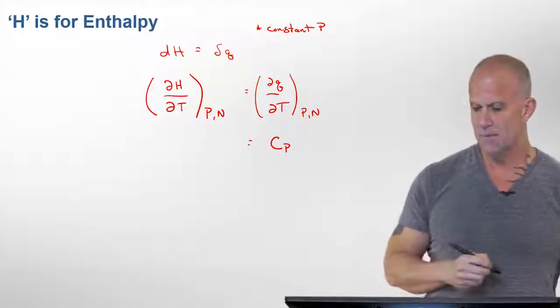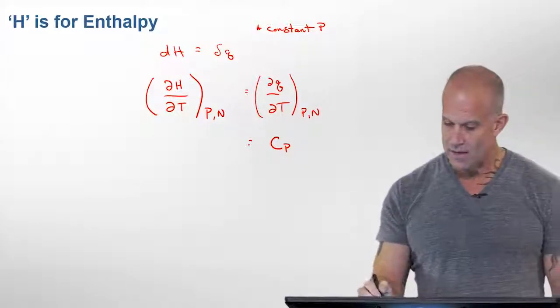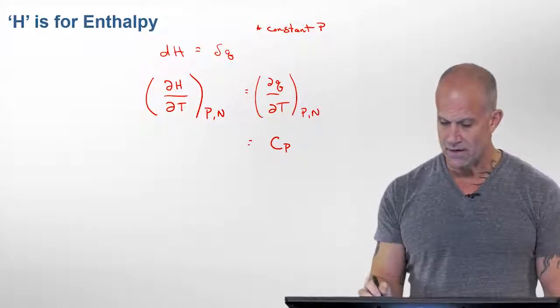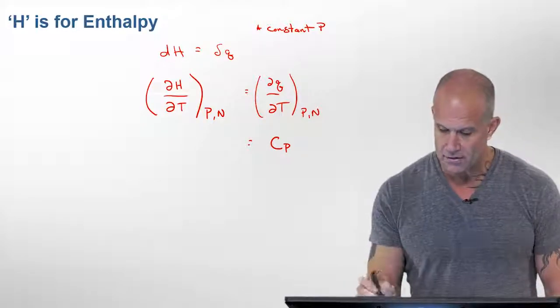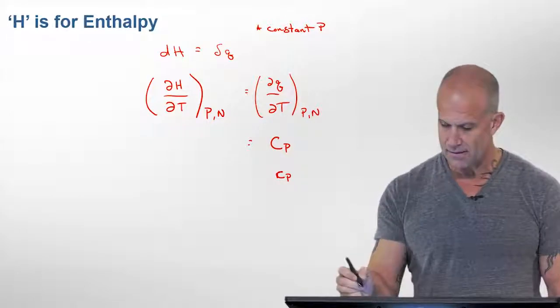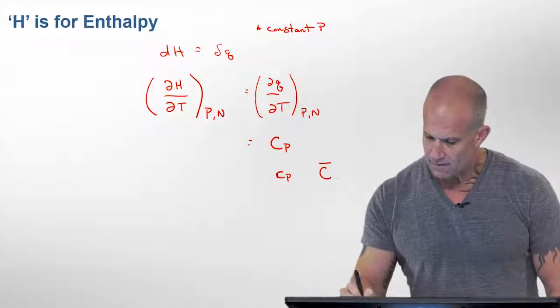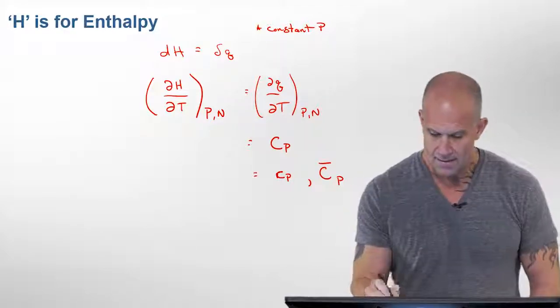we give this a symbol, the heat capacity, and then we put whatever the main variable that's constant. So if we keep N constant too, we would often call this the molar heat capacity, which we often represent as a small c or like this, are two common ways to represent that.